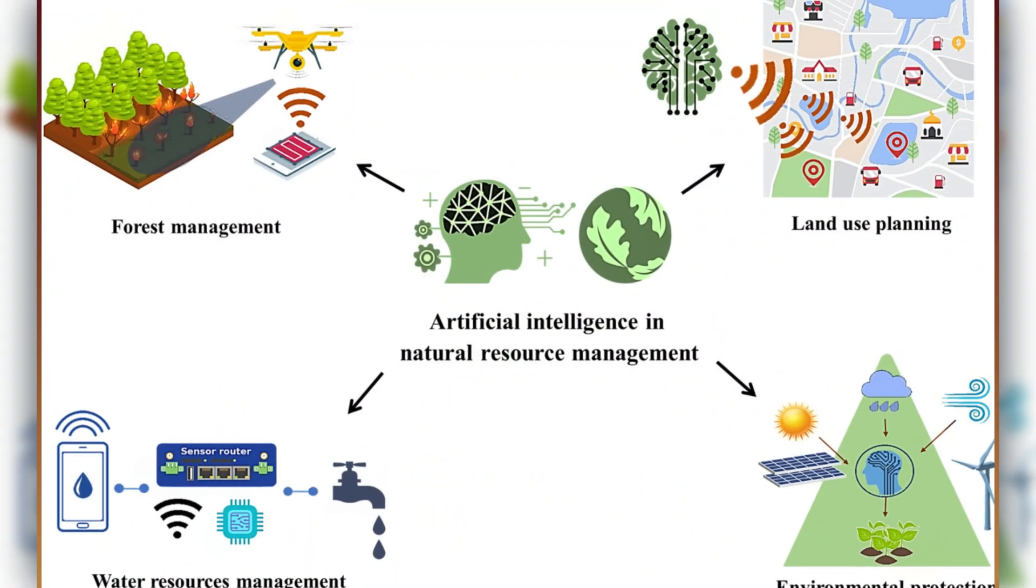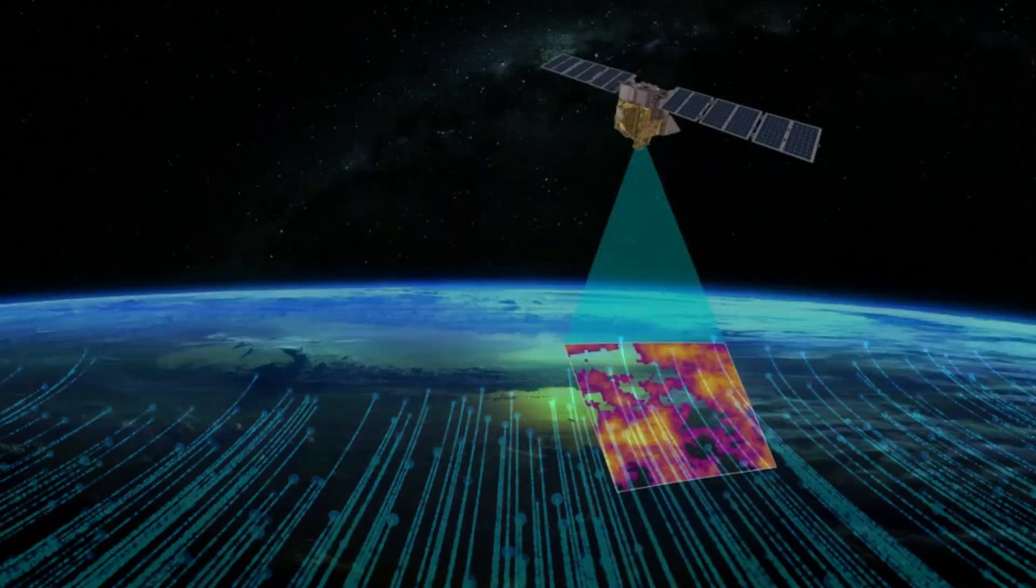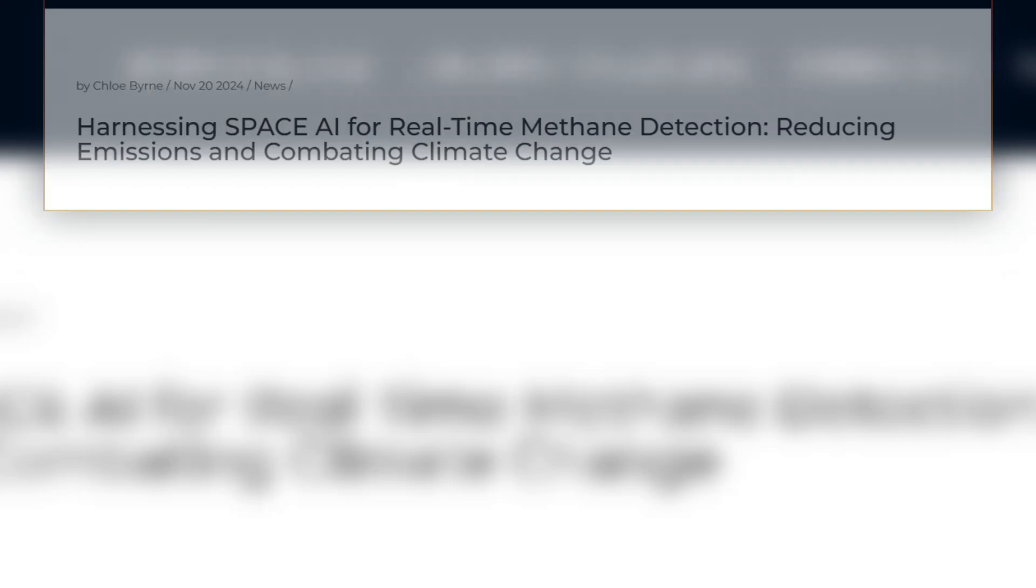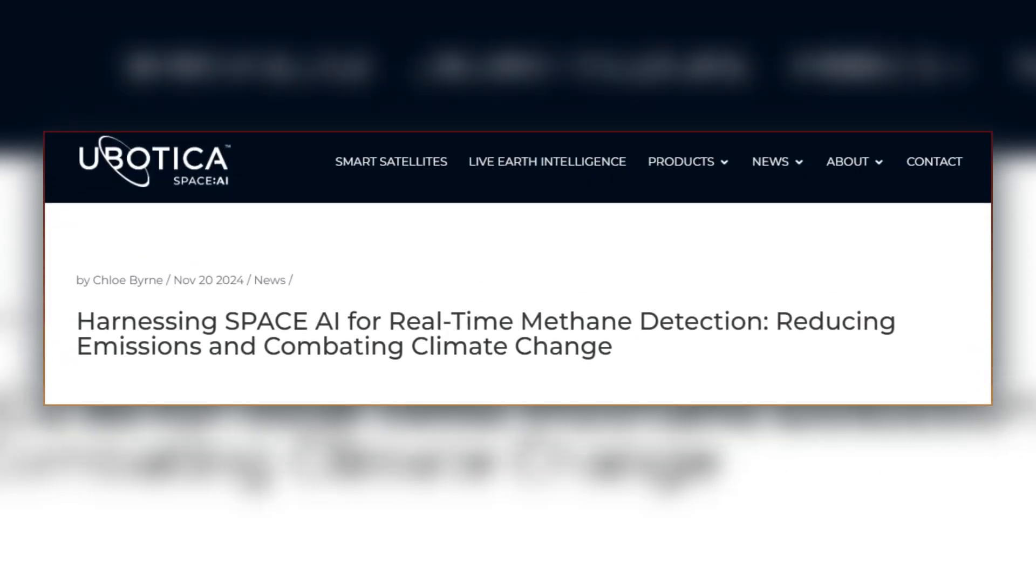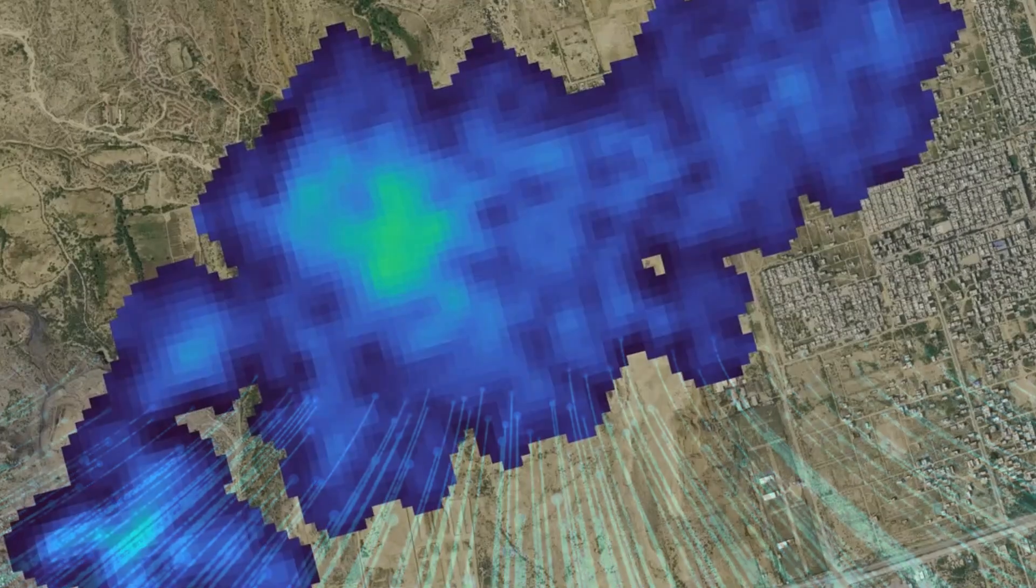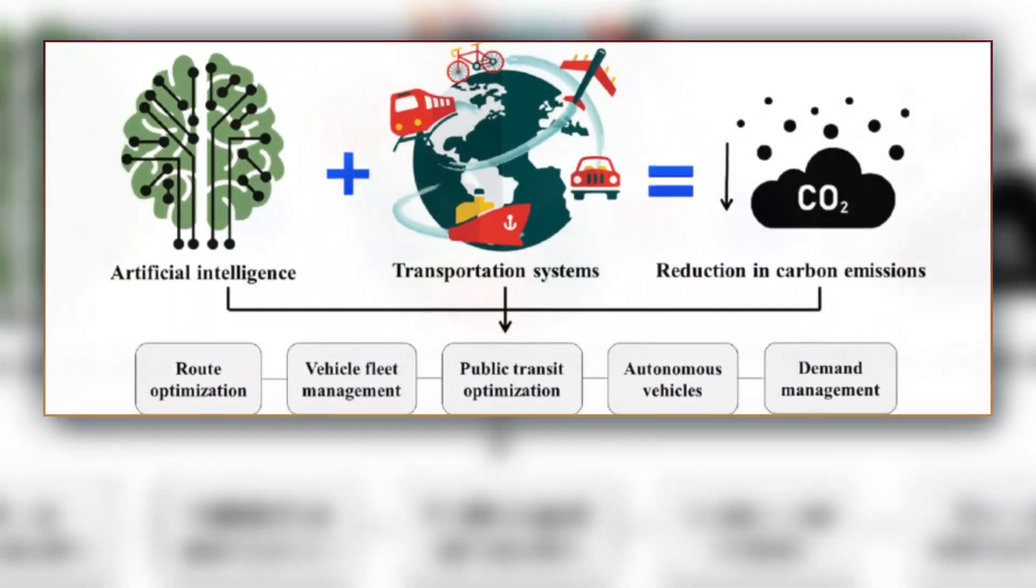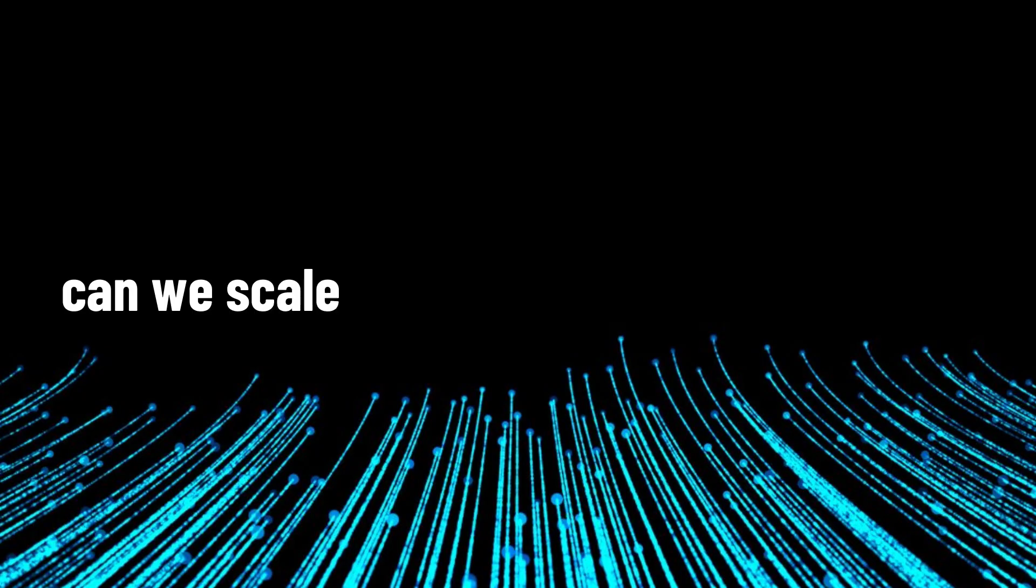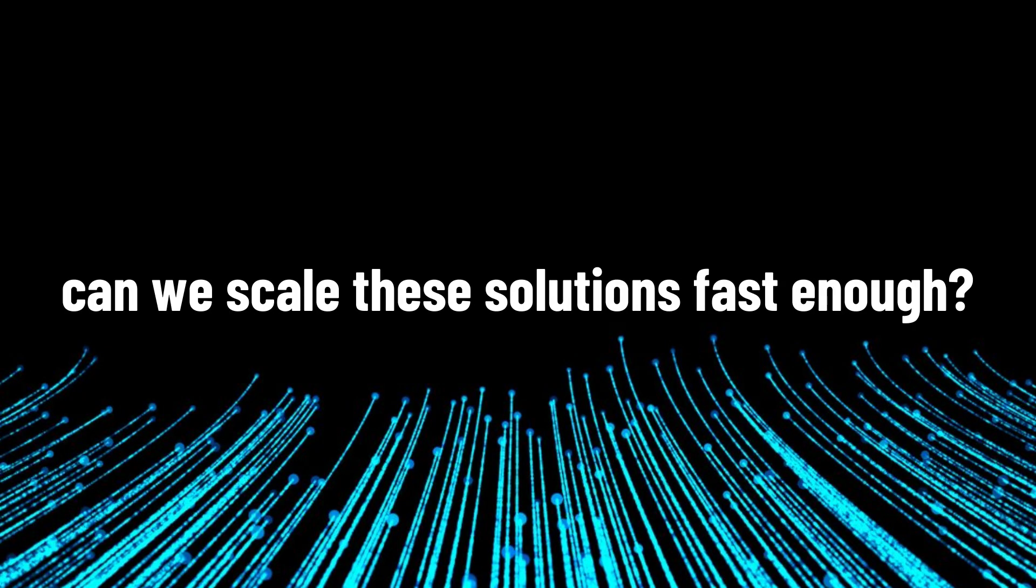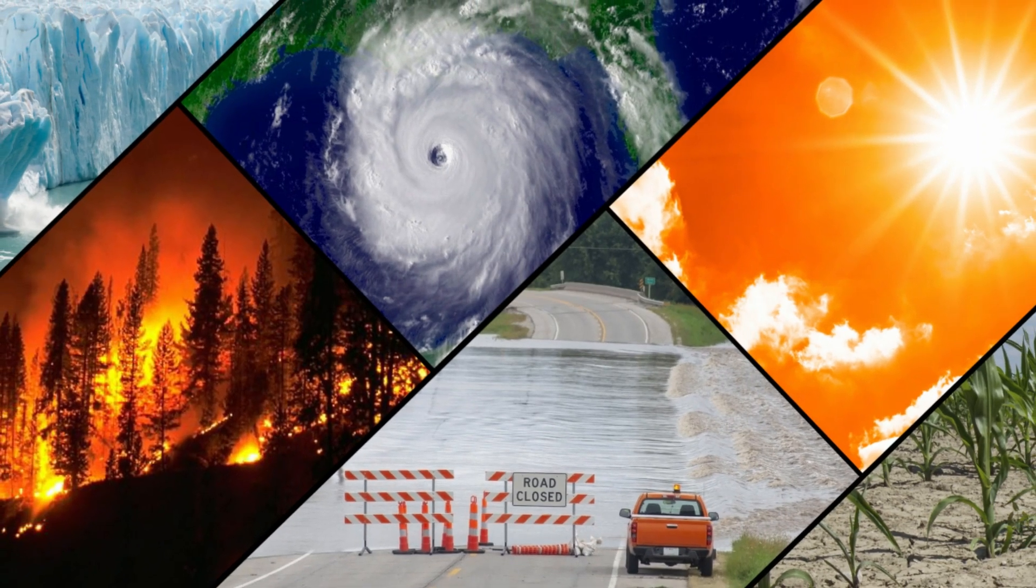But there's a solution emerging. AI systems are already helping reduce emissions by detecting methane leaks from space, optimizing renewable energy grids, and mapping destructive resource extraction in real time. These tools could help cut global emissions by up to 10%, equivalent to eliminating the entire European Union's carbon footprint. The question is, can we scale these solutions fast enough? But while the climate crisis accelerates, AI has identified an even more immediate threat to global stability.